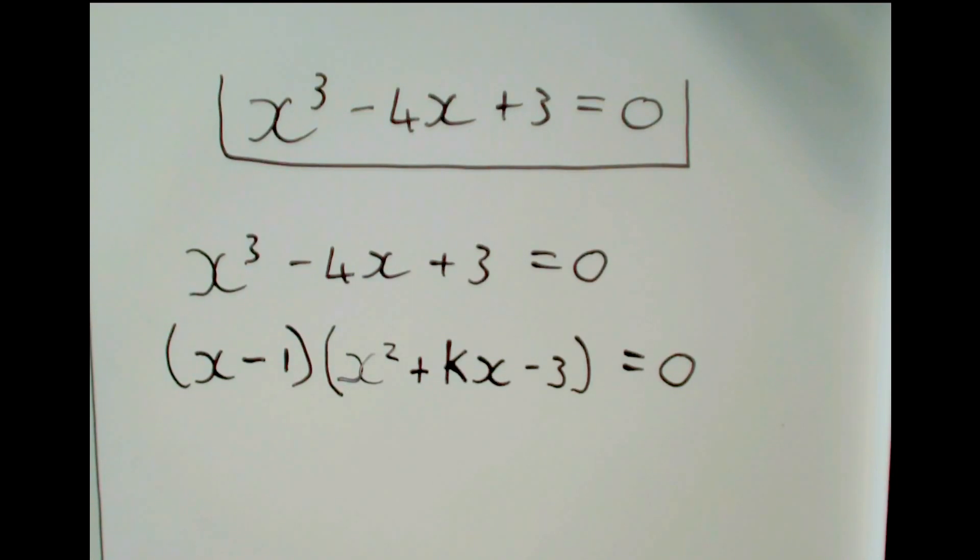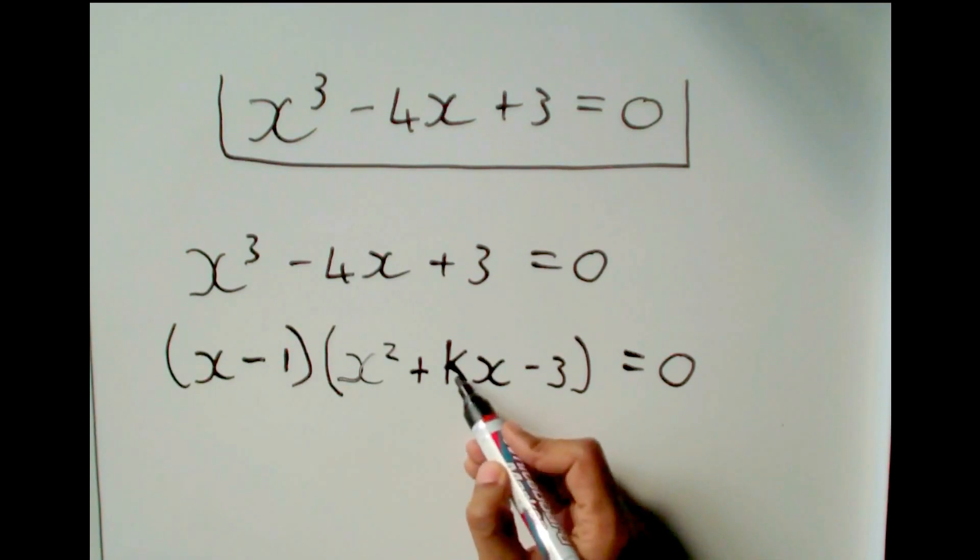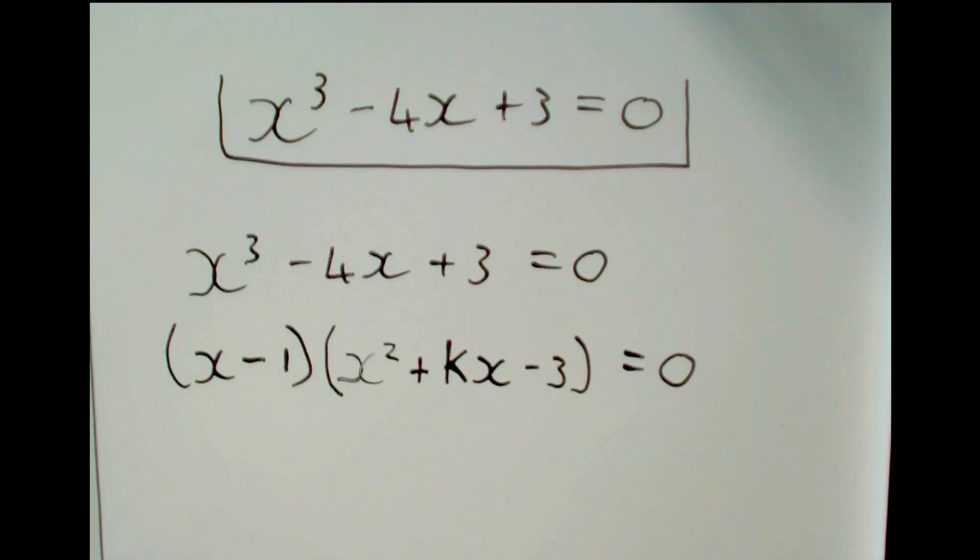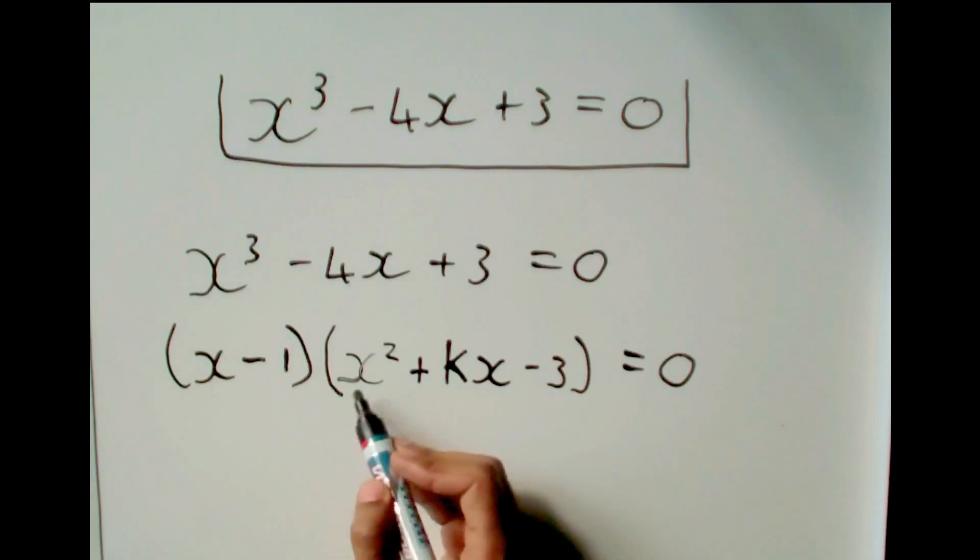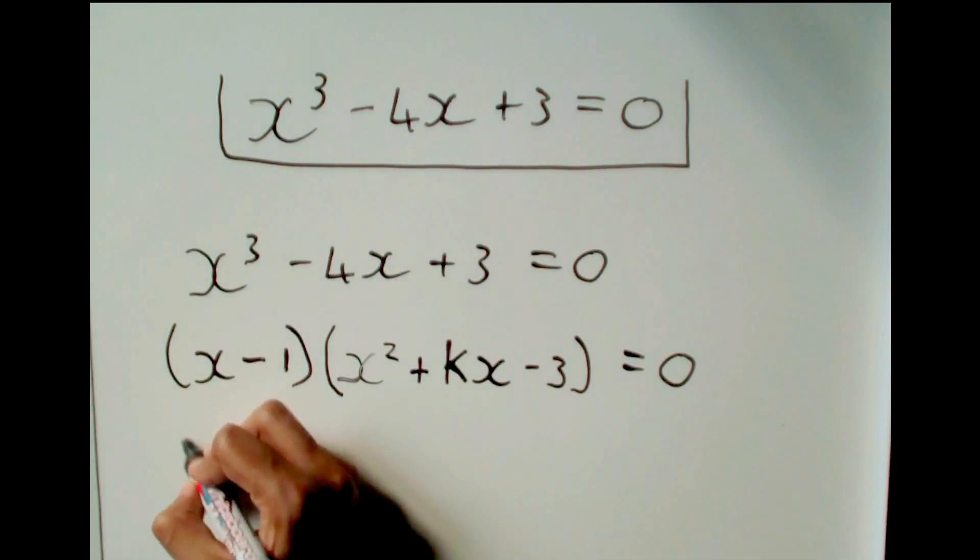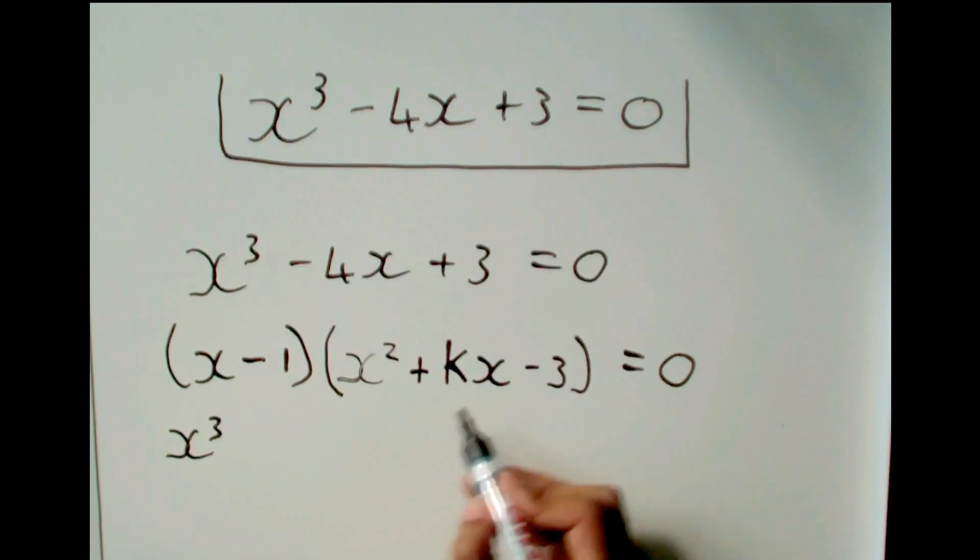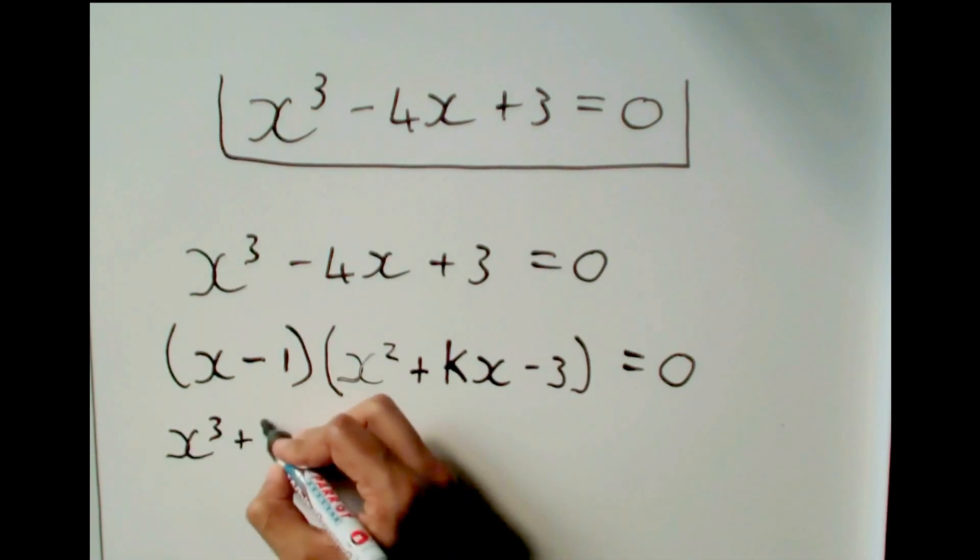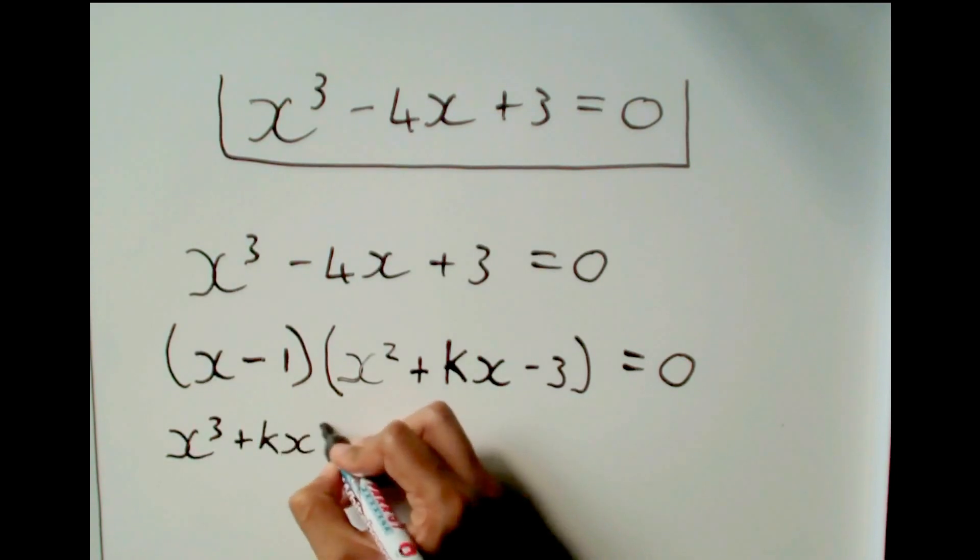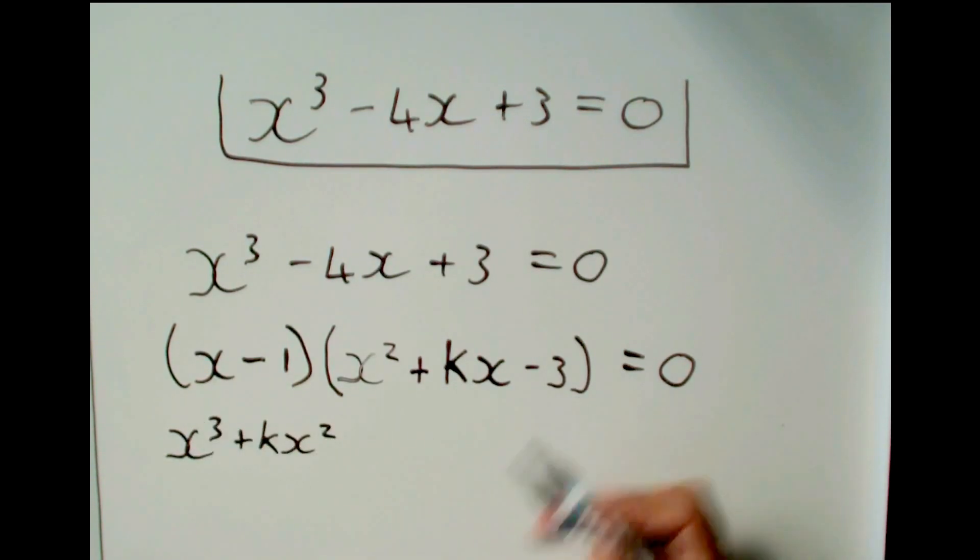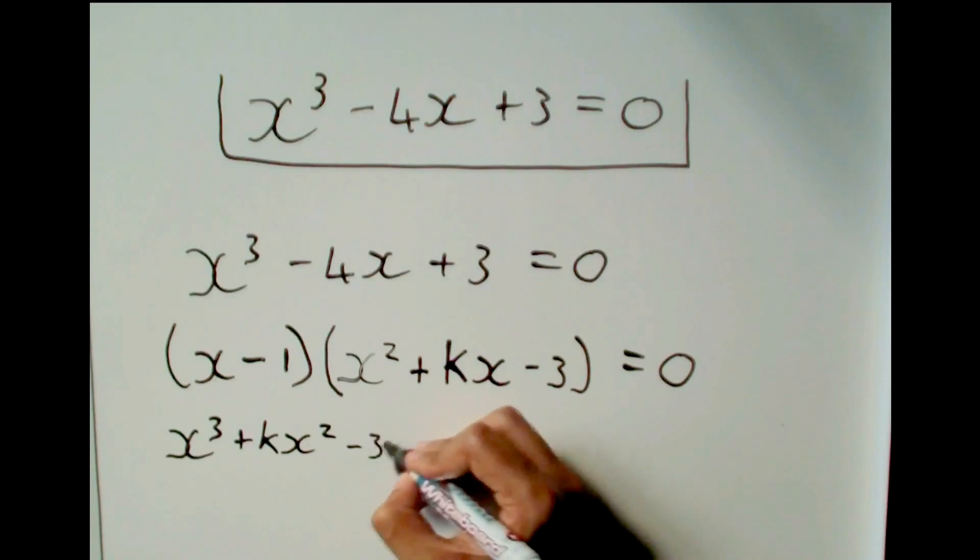So let's multiply this guy out. We do not have to multiply the whole thing out when you are doing the method. But for explanation purposes, you will see what happens when you multiply the whole thing out. Multiplying this out, we will get x times x squared will give me x cubed. Then x times kx will give me plus kx squared. And then x times minus 3 will give me minus 3x.